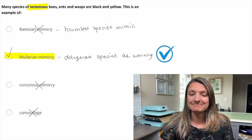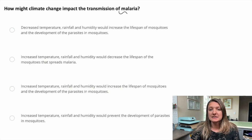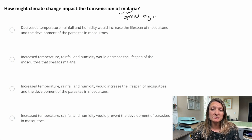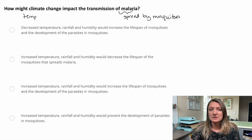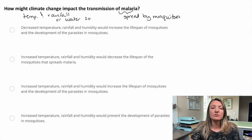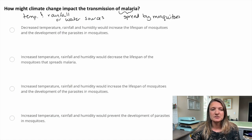Question two: how may climate change impact the transmission of malaria? A reminder that malaria is spread through mosquitoes. The parasites grow in those mosquitoes, and then they bite you — that's how malaria spreads. The mosquito life cycle is dependent on a few things: temperature, which affects how those parasites grow, and rainfall or water source to breed. More rainfall means more breeding, and increased temperature actually increases the parasites.